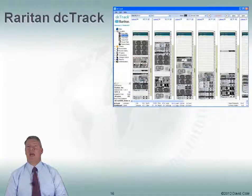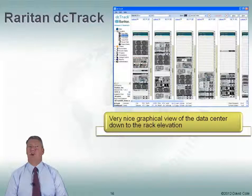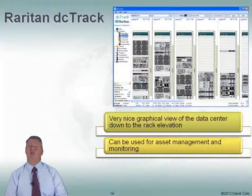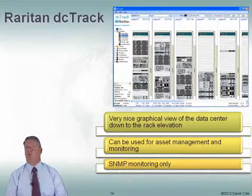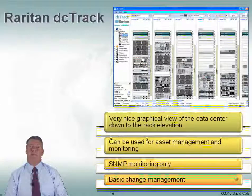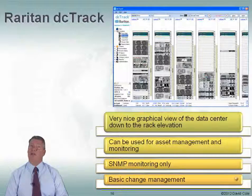Raritan DC Track is again a crossover tool — it has both an asset management tool and monitoring capabilities. They've got a nice graphical view of the data center down to the rack elevation, so you can see everything in your rack. You can use it for both asset management and monitoring. It only monitors SNMP for the protocol. They do some basic change management — as you manually change things, it will write that into a change management log. It's not automatic, but it does give you some change management capabilities.